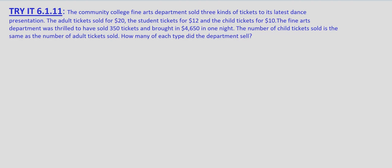First, we'll define our variables. Adult tickets we'll call A, student tickets we'll call S, and child tickets we'll call C. We've got three unknowns, which means we want to develop three equations. So let's go ahead and write out those three equations.